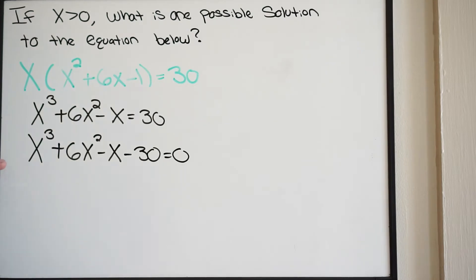Notice here that we are not dealing with a quadratic, so we can't do something like the quadratic formula or use the AC method for factoring. It's a little bit more involved. What we want to do here is fall back on the rational root theorem.